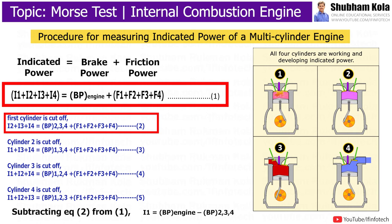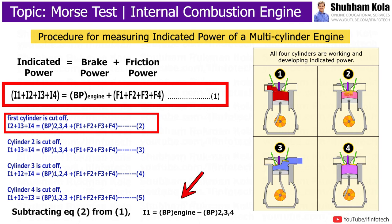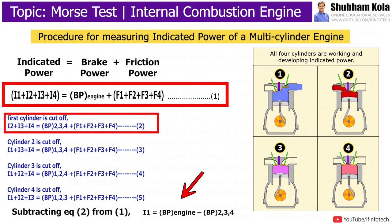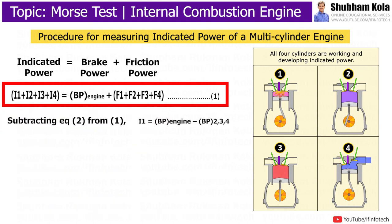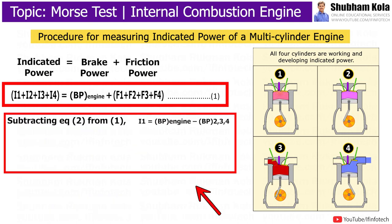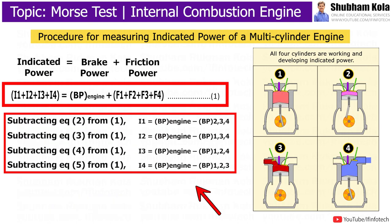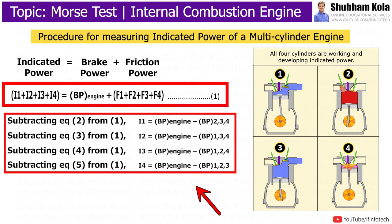Subtracting equation 2 from equation 1, we get: i1 is equal to the brake power of the engine minus the brake power of cylinders 2, 3, and 4. So, here we calculate the indicated power of cylinder 1 from this equation. In the same order, indicated powers i2, i3, and i4 are calculated from equations 1, 3, 4, and 5.